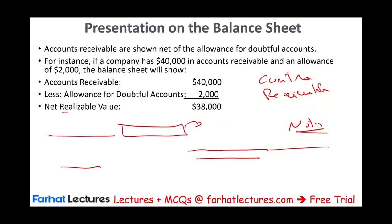Let's start with the allowance method using the sales method. TechMart had $300,000 in credit sales and estimates 0.8% will be uncollectible. We take $300,000 times 0.008, which gives us $2,400. Very simple: we debit bad debt expense $2,400 and credit allowance $2,400. That's it — one step.